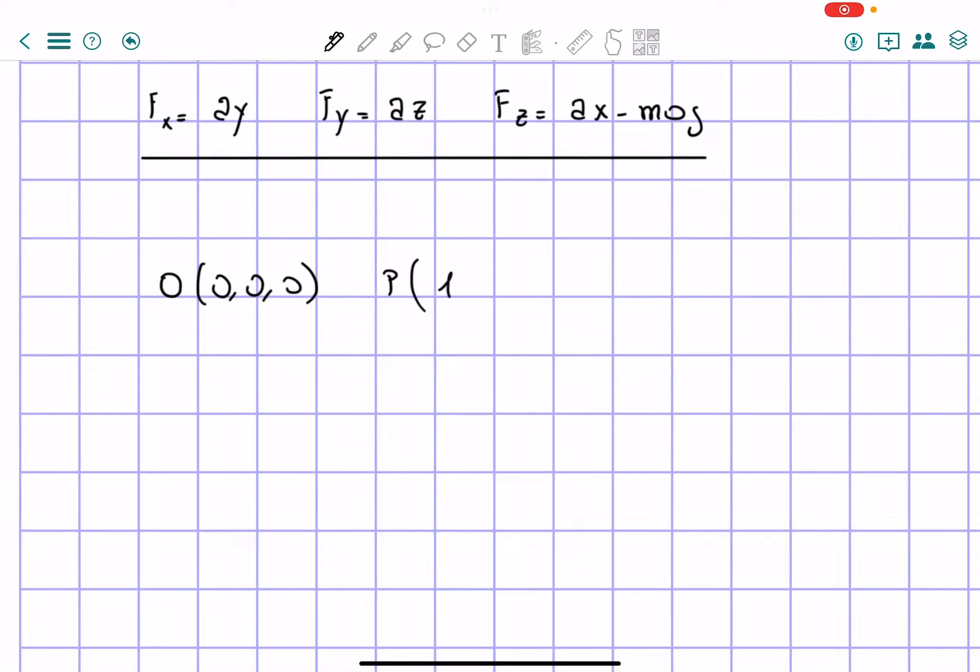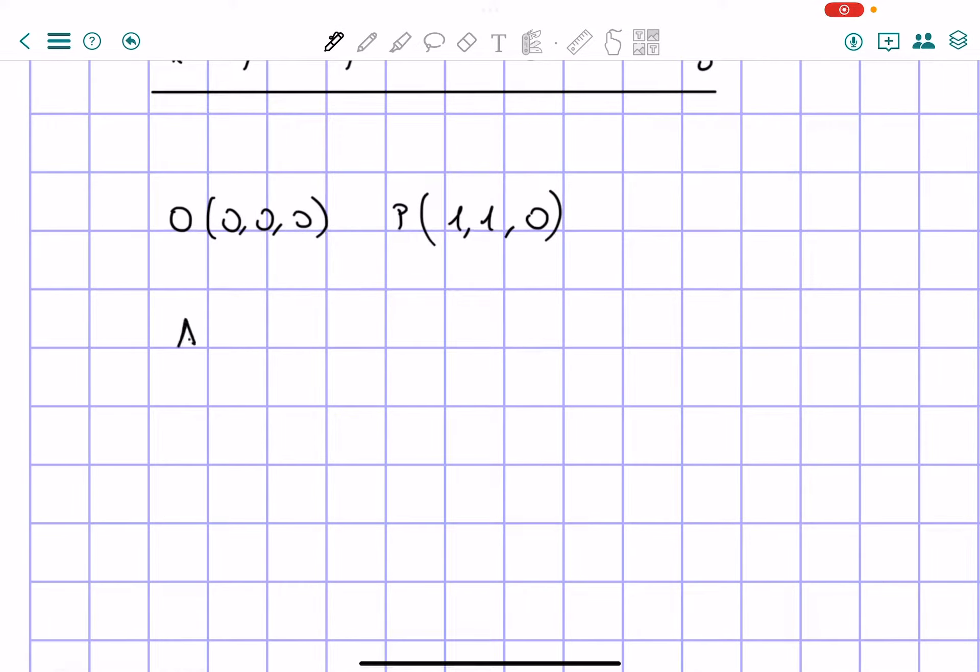which is 1, 1, 0, in two different movements. First of all, along the x-axis,